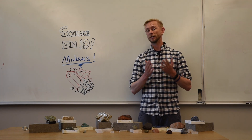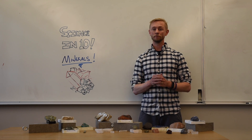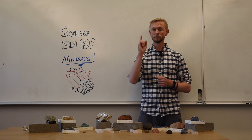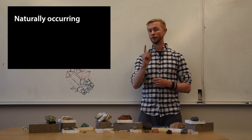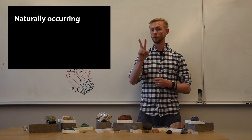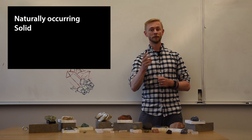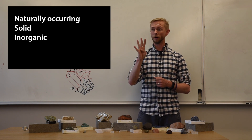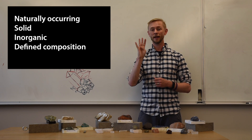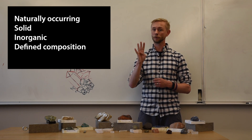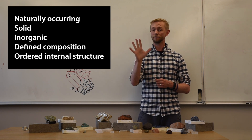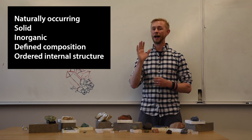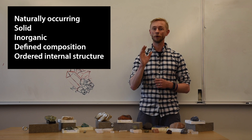In order for a substance to be classified as a mineral, it must satisfy all of the five following criteria. One, it must be naturally occurring. Two, it has to be a solid. Three, it has to be inorganic. Four, it needs to have a defined chemical formula or set chemical composition. And five, it needs to have a set internal structure to how the atoms forming the mineral are arranged.